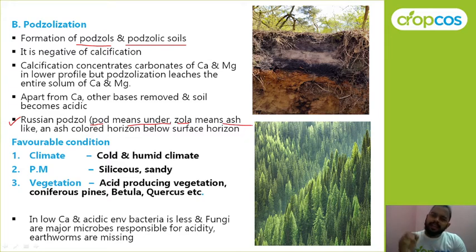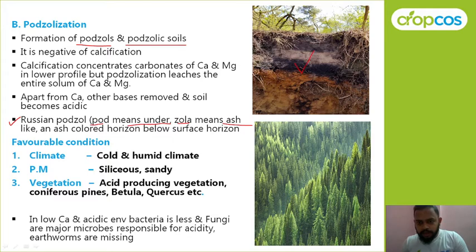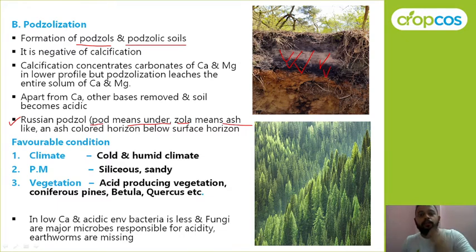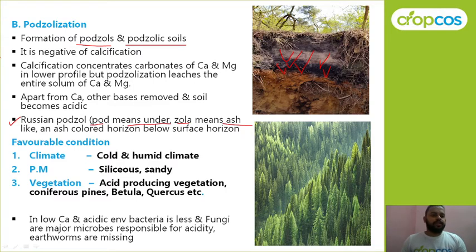Ash here refers to color — an ash-colored horizon. In the photograph you can see this color — it is neither black nor white; that is your ash color. Basically, porzolization is the negative of calcification. Calcification means accumulation of calcium carbonate, whereas porzolization means removal of calcium carbonate from the upper horizon to the lower horizon.